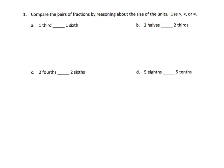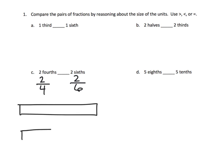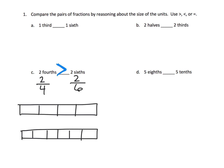This problem is really talking about common numerators. For example, would you rather have two-fourths or two-sixths? The idea is we want students to recognize that if we have the same size whole and cut it into fourths versus sixths, when you cut things into a larger number of units, the sizes themselves become smaller. Sixths are smaller than fourths because you cut into more pieces, so the pieces become smaller.